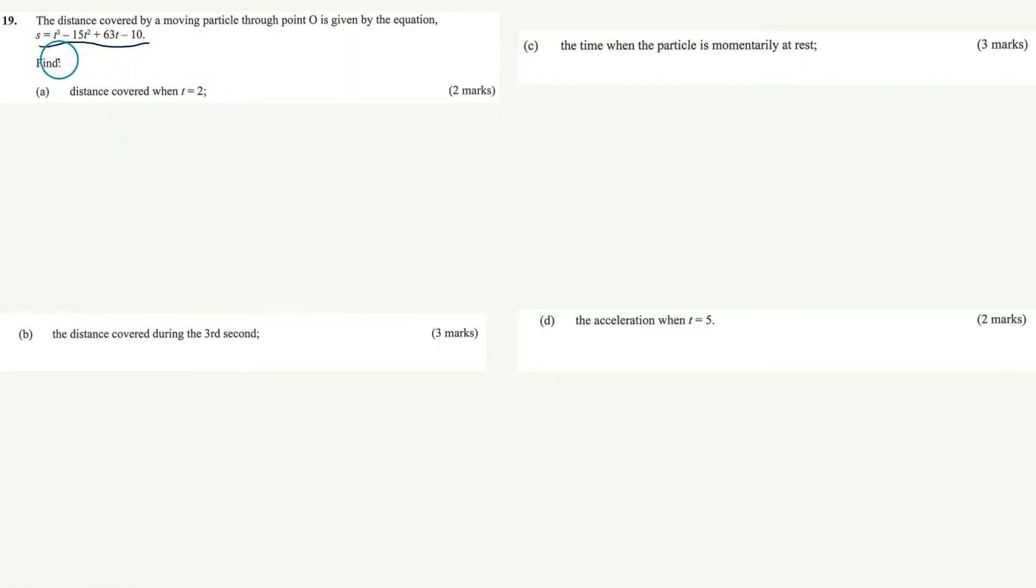All you have to do is use the equation that you're given. When t equals 2, s is going to be equal to 2 cube minus 15 times 2 squared plus 63 times 2 minus 10. If you work this out, you will get 64 units.